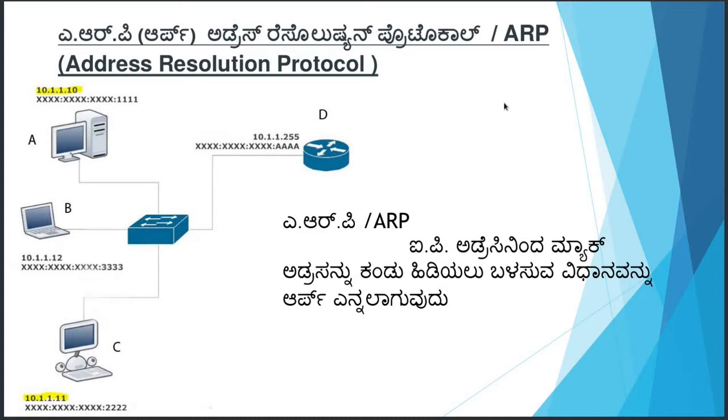Layer 3 information includes IP address and MAC address, which are the most important. One device on one network has its own unique IP and MAC address.